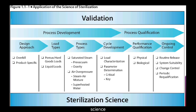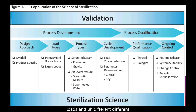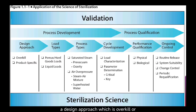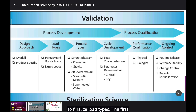Sterilization science generally has two phases: the first is process development and the second is process qualification. In process development, first we have to select a design approach — which design approach is applicable for sterilization of articles and loads. There are different types of loads, so first we need to select a design approach, which is either overkill or product-specific design approach.